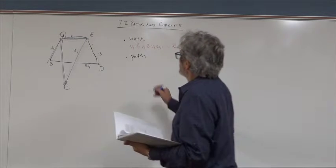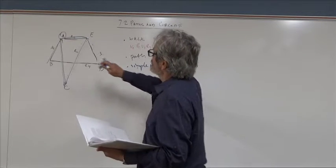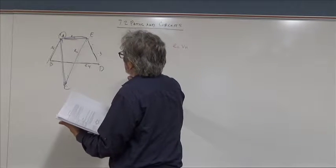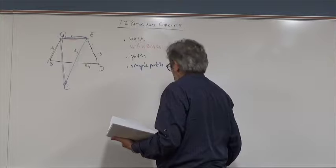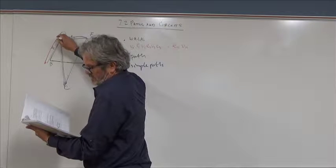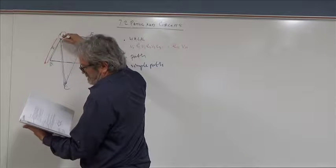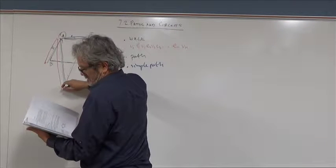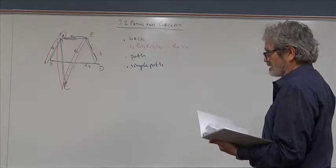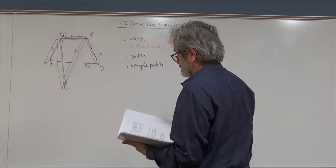A simple path additionally never visits the same vertex twice. For example: from B, take E1, then E5 to C, then E6 to E, then E3. This simple path never traverses the same edge twice and never visits the same vertex twice.